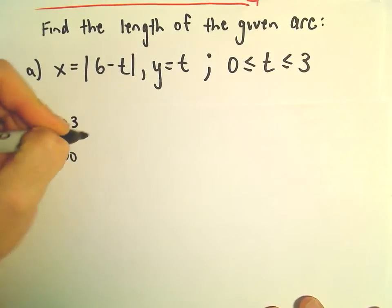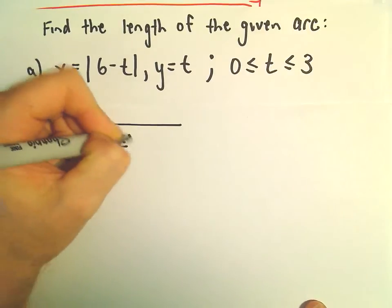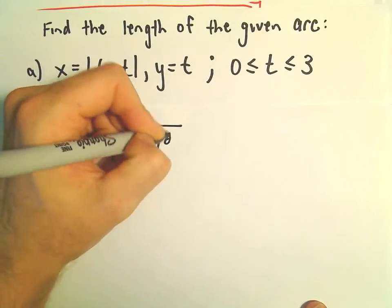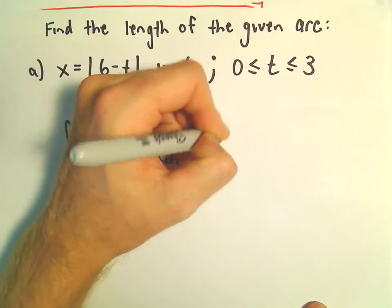So we'll have to integrate from 0 to 3. We'll take the derivative of x with respect to t squared, plus the derivative of y with respect to t squared dt.